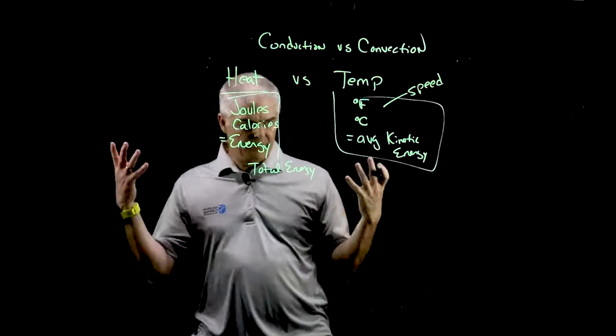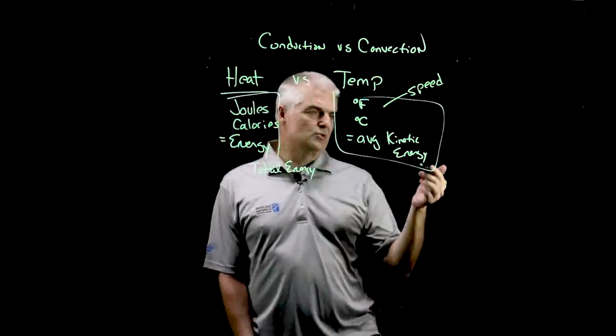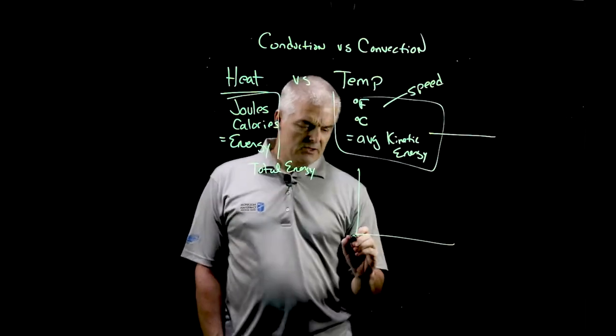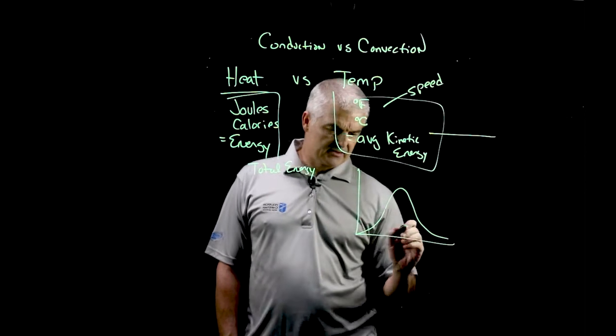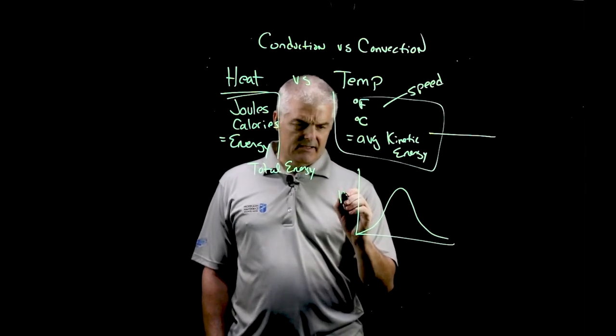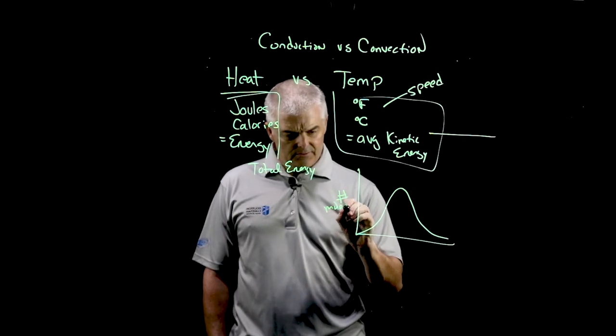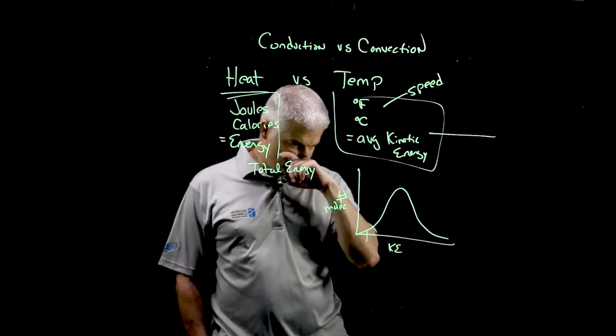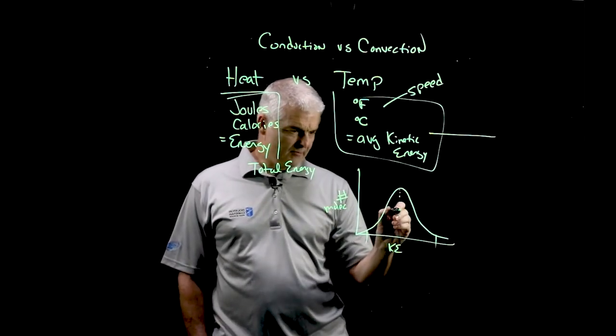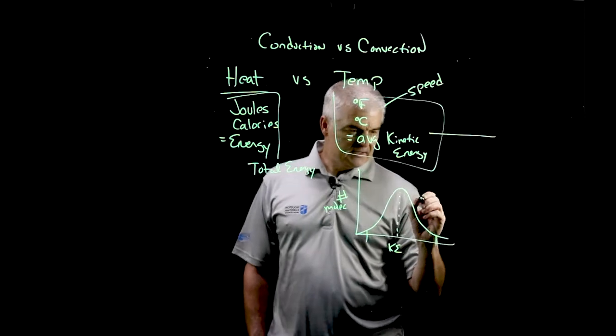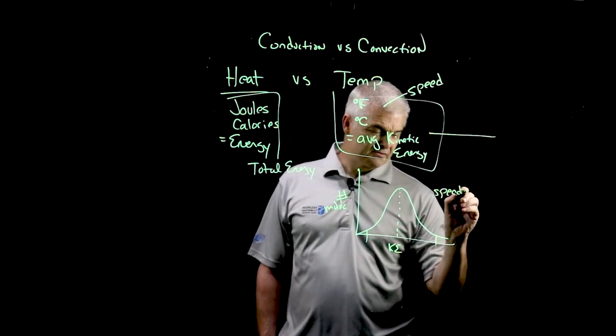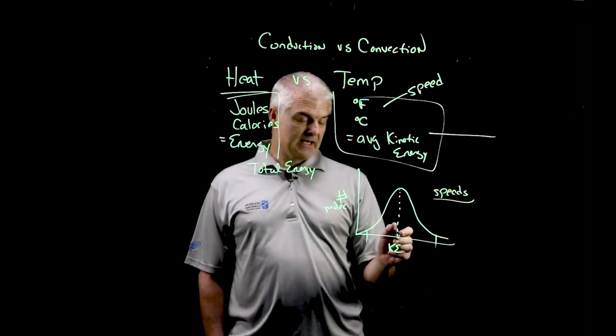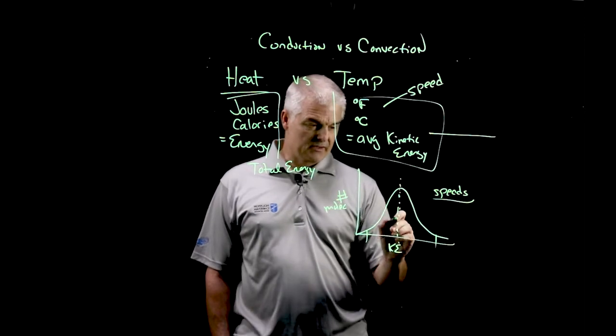If we were to look inside this room, I'm in a room where it's maybe 72 degrees or something like that. You would find a graph that looks like this, where this is the number of molecules and this is the kinetic energy. Some of the molecules would have low kinetic energy. Some would have high kinetic energy. But a lot of them would have this. And temperature is the average.